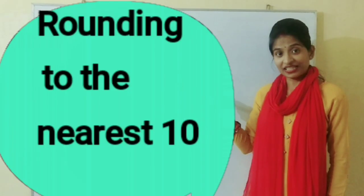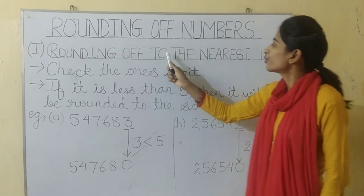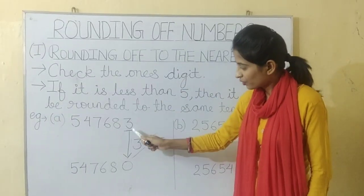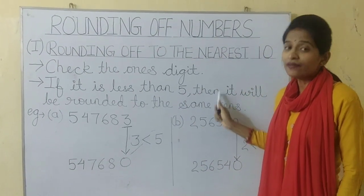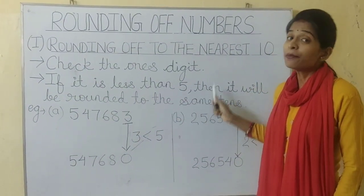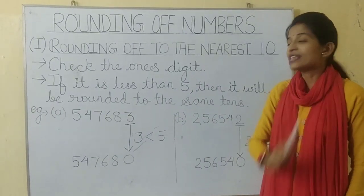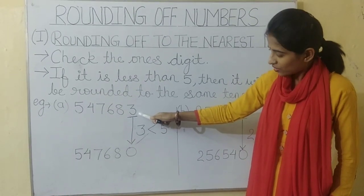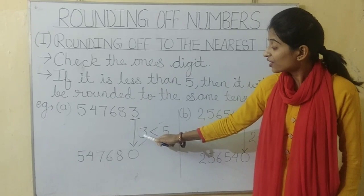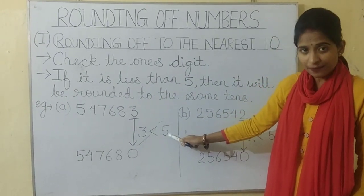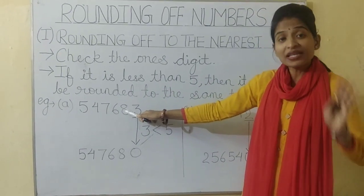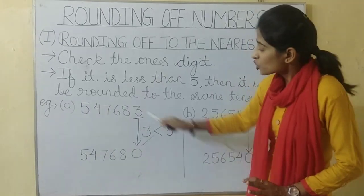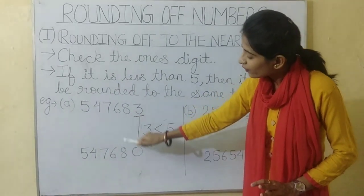Rounding to the nearest ten. For rounding off to the nearest ten, we will check the one's digit. If it is less than five, then it will be rounded to the same ten. For example, we will check the one's digit. Here the one's digit is three, and three is less than five, so the ten's digit will remain the same — there will be no change. The ten's digit is 8, so it will remain 8.